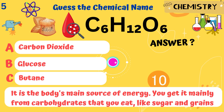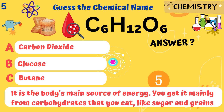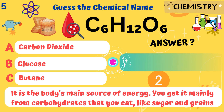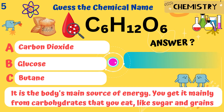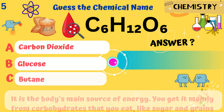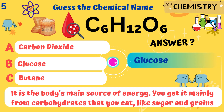C6H12O6. It is the body's main source of energy. You get it mainly from carbohydrates that you eat, like sugar and grains. Answer: Glucose.